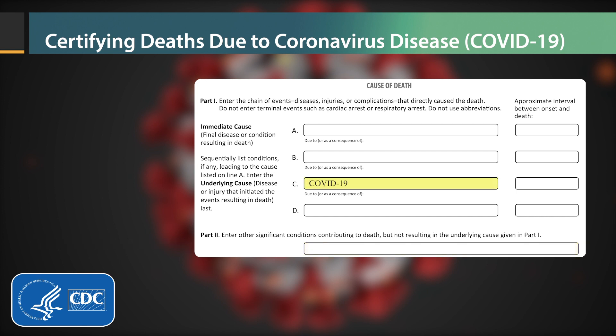If COVID-19 is determined to be the underlying cause, it should be reported on the lowest line used in Part 1, with any conditions to which it gave rise — such as pneumonia or respiratory distress — in a logical sequence on the lines above. Comorbidities that contributed to death, such as COPD or hypertension, should go in Part 2.